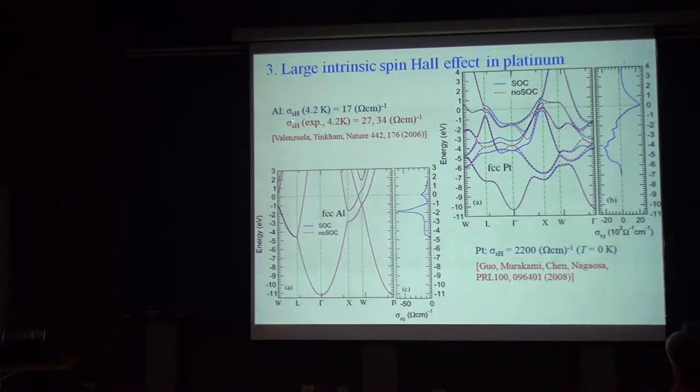So, for aluminum, we got the spin Hall conductivity at low temperature about 17, which is in the same order of magnitude reported by Tinkan's group. But surprisingly, when we look at the spin Hall conductivity in platinum, you see that it's two order magnitude larger than aluminum. We have at zero temperature, 2,000. And it's enormous.